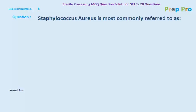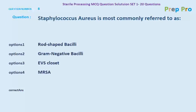Question number eight: Staphylococcus aureus is most commonly referred to as what? The options are rod-shaped bacilli, gram-negative bacilli, EBS closet, and MRSA. The correct option is MRSA.